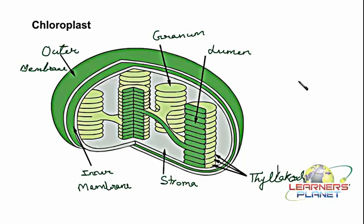The DNA within the chloroplast does not code for all structural material, but it does store information for functional processes like photosynthesis and pigments. For this reason, chloroplast is also known as a semi-autonomous organelle. Another structure which is also known as a semi-autonomous organelle is mitochondria — the powerhouse of the cell.